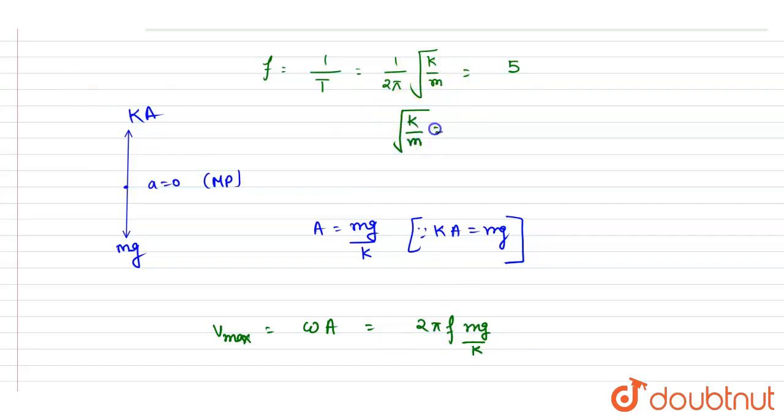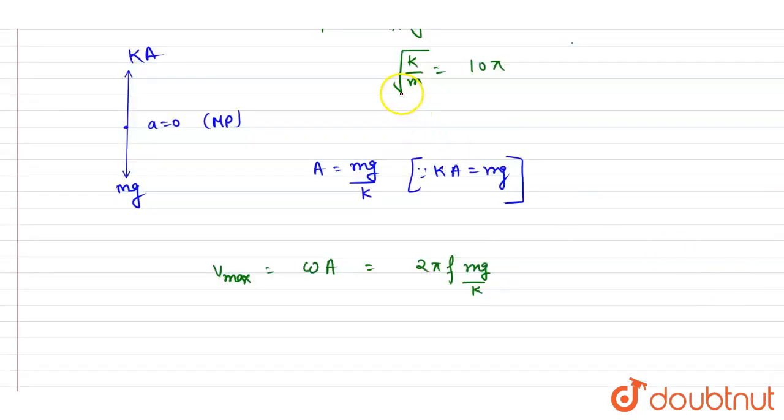So we can write down under root k by m is equals to, if you cross multiply, it is 10π. If you square both sides and invert it, you will get m by k value is equals to 1 by 100π square, by squaring this equation and inverting it.